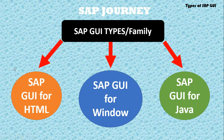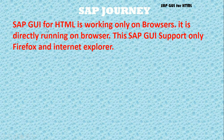Whenever we are using SAP through a browser, we use SAP GUI for HTML. Whenever we are using SAP on Windows, users use SAP GUI for Windows. And similarly, SAP GUI for Java is available for Java-based environments. SAP GUI for HTML works only on a browser — it runs directly on the browser.